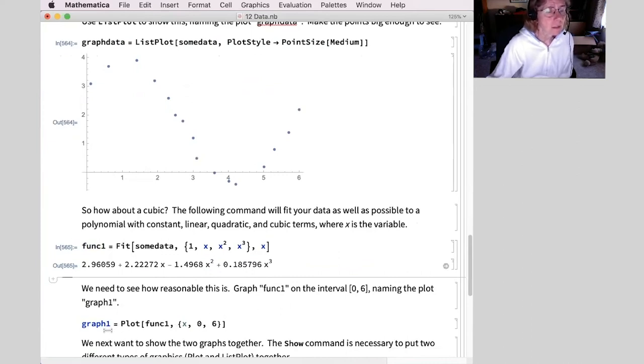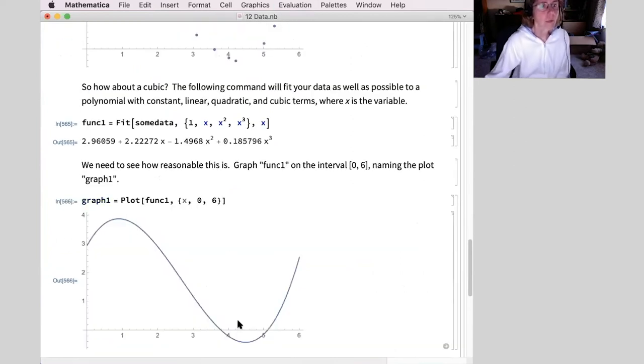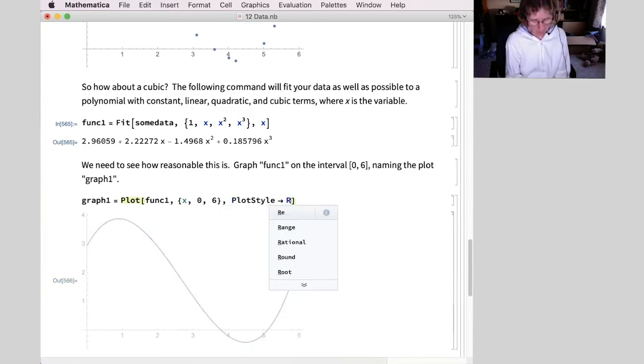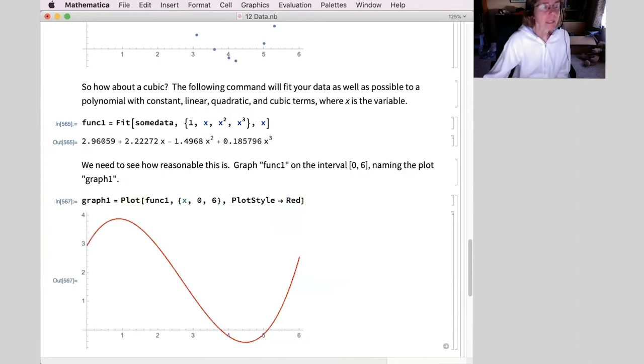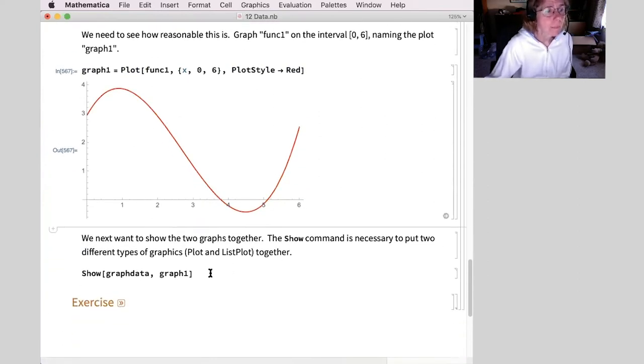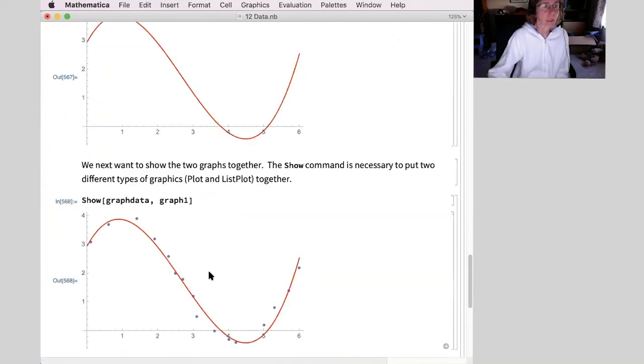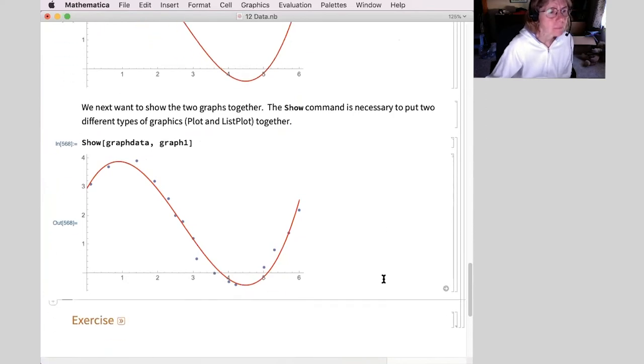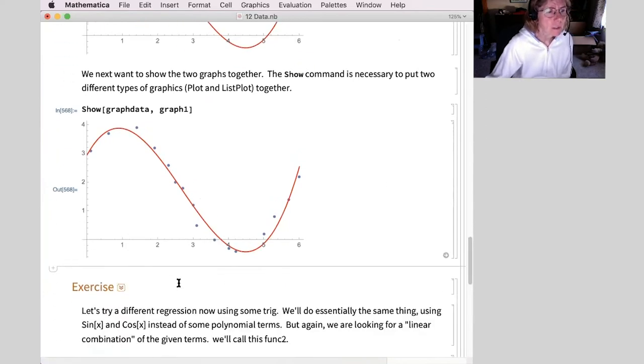Now I want to graph that. So I'm going to call this graph one and just plot this. Here's my function one because this came out in a very nice form and going from zero to six. Well, I've got blue dots and I've got a blue graph. We're going to change that a little bit. So let me come in here and put in plot style and let's use red. So that's renaming my graph one now. I want to put these together. We have different types of graphics. There's a plot and a list plot. I need to use the show command. But that's the reason I wanted to name these. So this is very easy to do right here. Not great, but not bad.